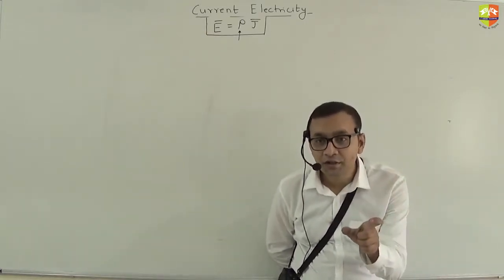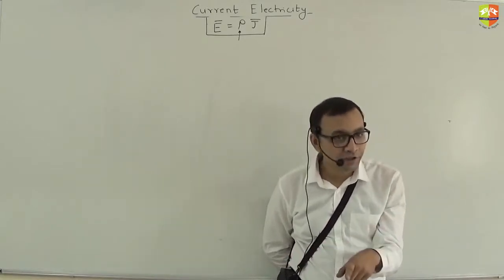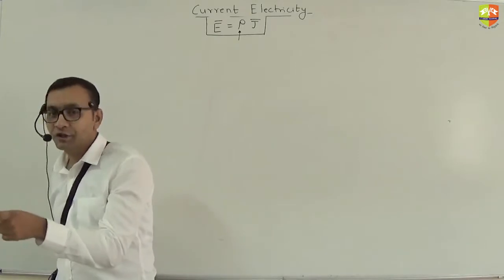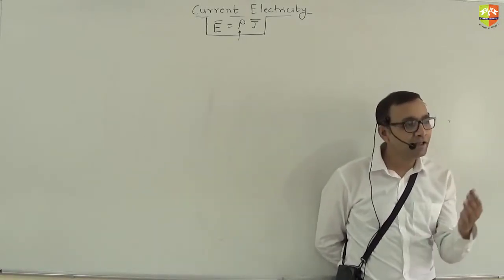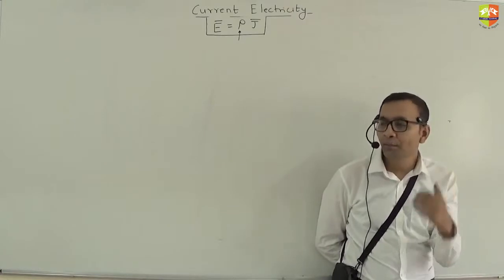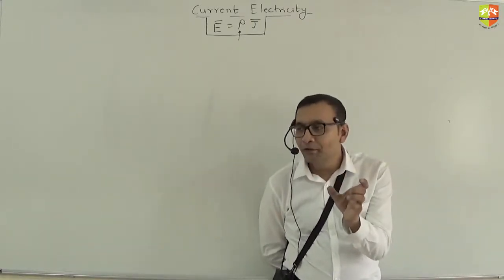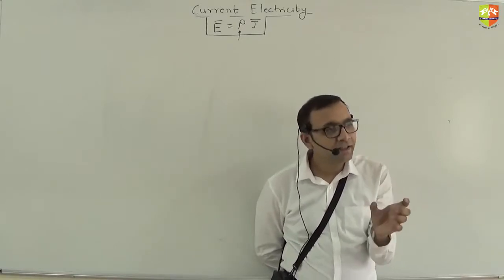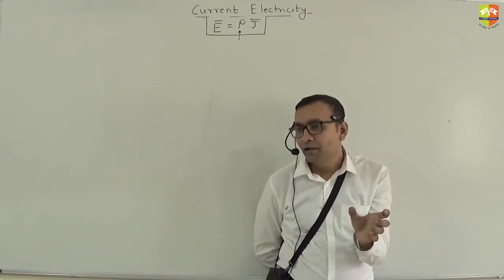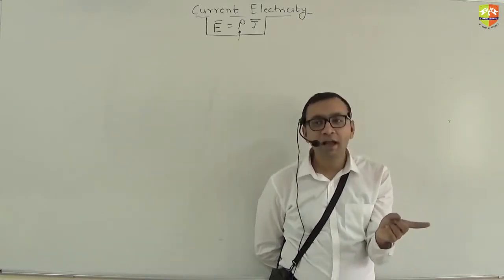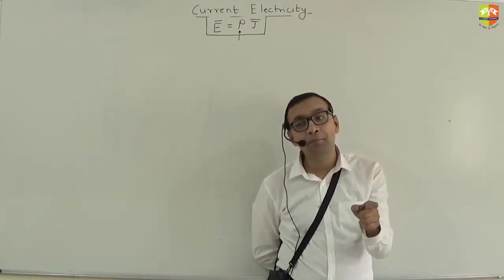Between two collisions, the speed is constant. Why? Because there is no force between two collisions. The only force that can come is because of a collision. Regarding the net electric field, we are assuming it is not influencing the motion of the electron between the two collisions. But if you apply an electric field, then between two collisions the electric field can influence the motion.